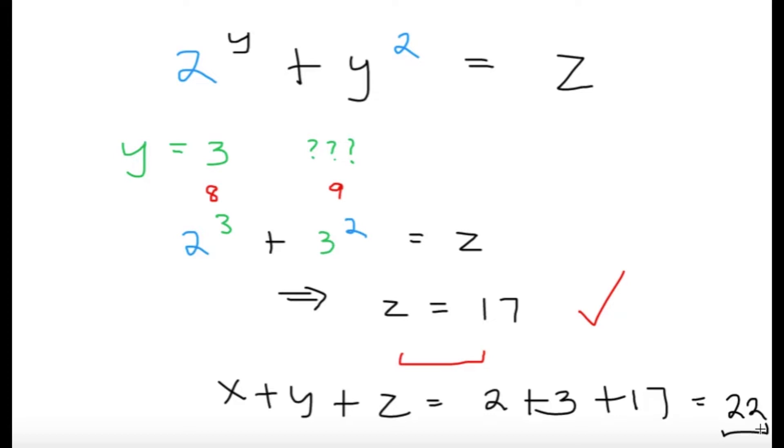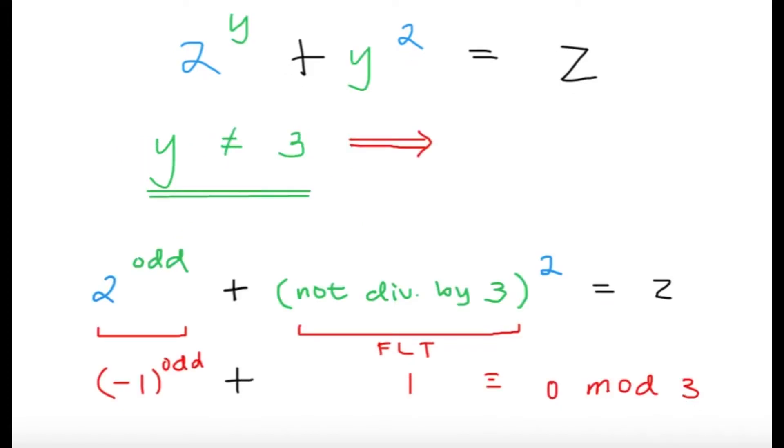But we haven't really proved that y should be equal to 3. So let's try to prove this by considering the case that y is not equal to 3. Now, if y is not equal to 3, y is still odd, but it's just not equal to 3. So 2 raised to an odd number plus something not divisible by 3 squared equals z.